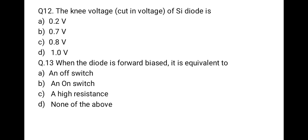The next question is: the knee voltage, or cut-in voltage, of a silicon diode is — and the correct option is 0.7 volts. The silicon diode conducts at 0.7 volts. This breakdown voltage is also known as the cut-in voltage or knee voltage.